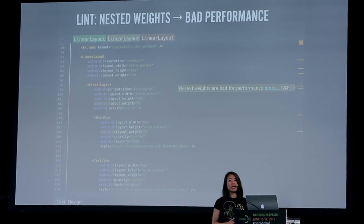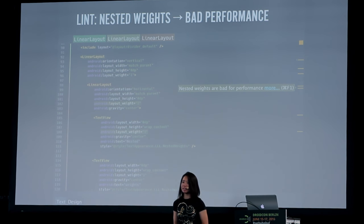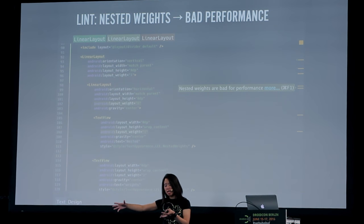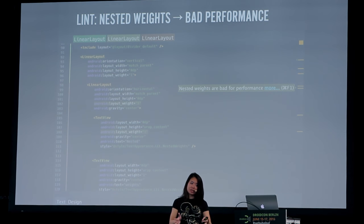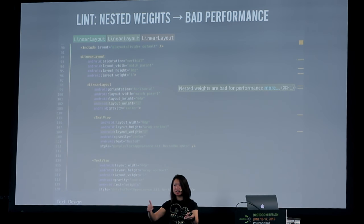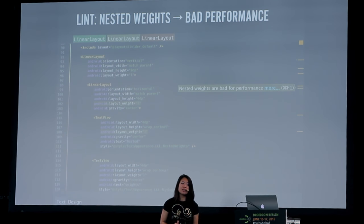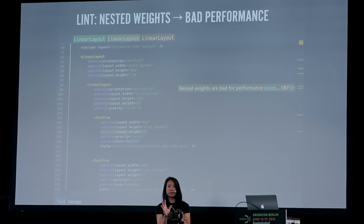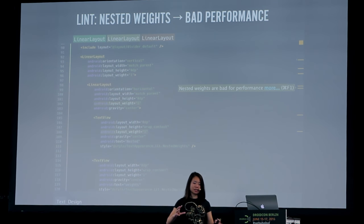Another thing Lint will warn you about is nested weights. LinearLayout is actually one of my favorite layouts, and weights are an extremely flexible tool within them. The problem comes when you start to nest them. The way weights work is that LinearLayout measures every other child first, then assigns whatever is left to the child with the weight. When you nest them, that weight becomes a factor of uncertainty, and you multiply that uncertainty. Nested weights in LinearLayouts are not great for performance. In my experience, if you have nested weights, there's probably always a way to refactor to get the look you want without nesting them.